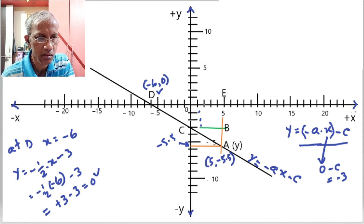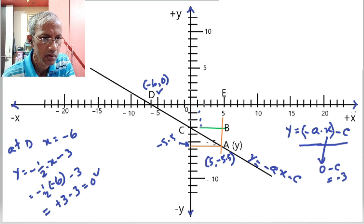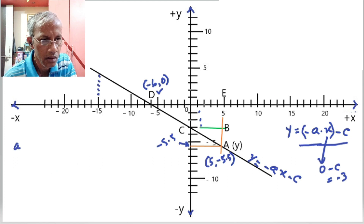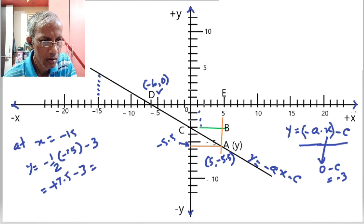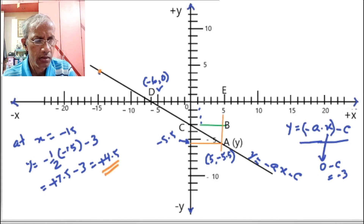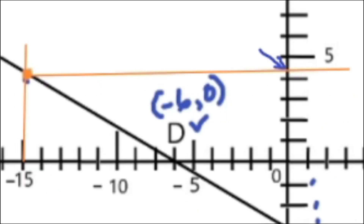Let's verify for one more value — taking x equal to minus 15. At x equals minus 15, y equals minus half times minus 15, minus 3. That equals plus 7.5 minus 3, which equals plus 4.5. Looking at the graph, y is very near to 4.5 — it's just a small drawing error — so we can confirm y equals 4.5.